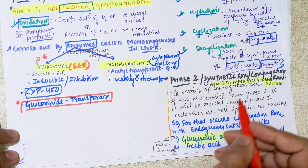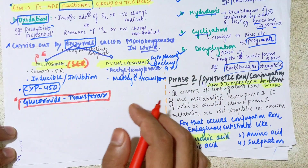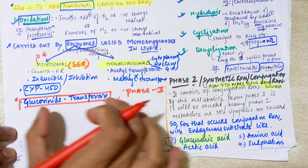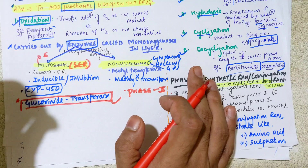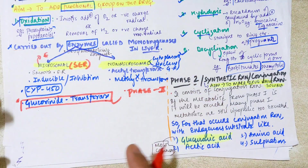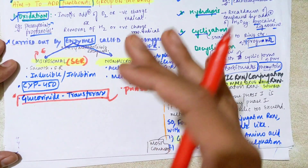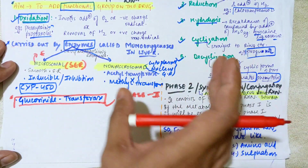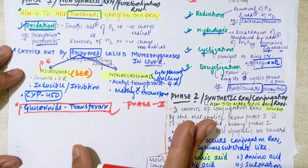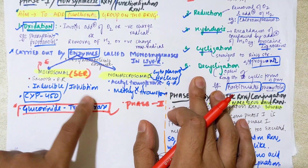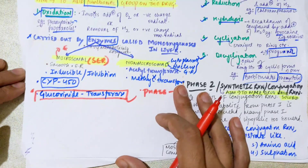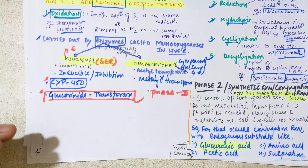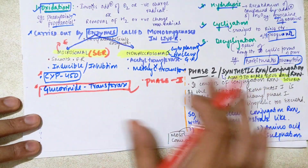Other conjugation reactions occurring in phase two are metabolized by non-microsomal enzymes. So, all phase two reactions except glucuronidation — which is done by glucuronide transferase, a microsomal enzyme — are done by non-microsomal enzymes. Most oxidation, reduction, and hydrolysis are done by microsomal enzymes, though some are also done by non-microsomal enzymes. The key point remains: inducibility and inhibition are possible only with microsomal enzymes.